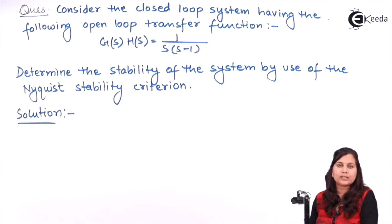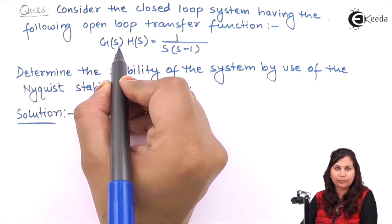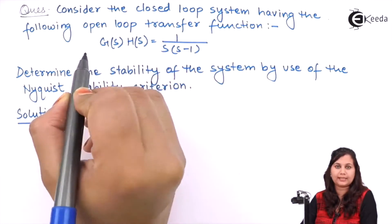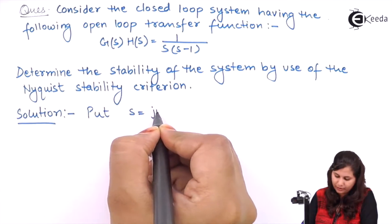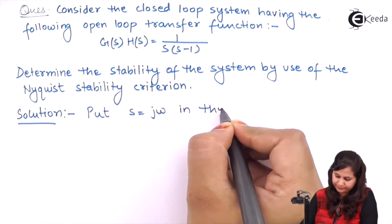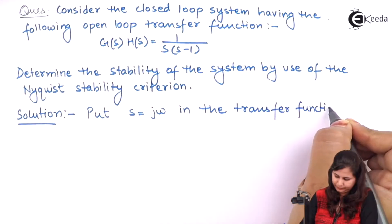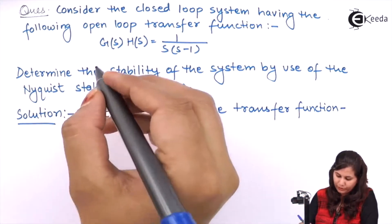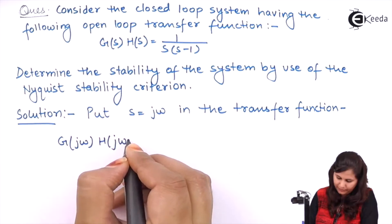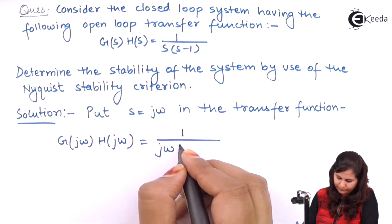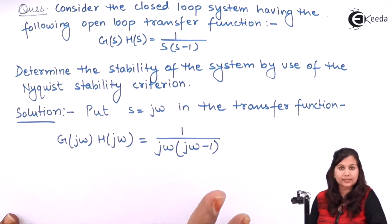First, we will put s = jω in this transfer function so that we will be able to find out G(jω)H(jω), that is the frequency response of the system. So putting s = jω in the transfer function, we obtain the frequency response of the system.